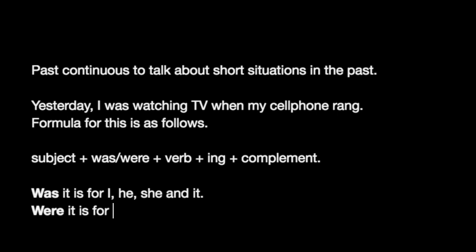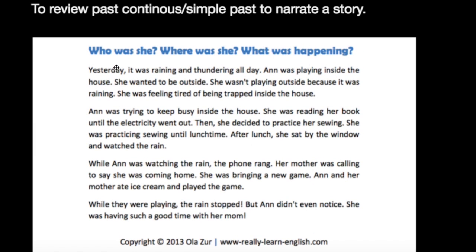The simple past refers to a specific point in time — something that already happened. Past continuous is used when talking about an ongoing situation in the past that is usually interrupted by the simple past. For example: yesterday I was watching TV when my cell phone rang — I was in the middle of something when my phone interrupted.